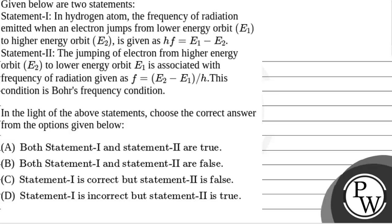Let's read the question. The question says that given below are two statements. Statement 1: In hydrogen atom, the frequency of radiation emitted when an electron jumps from lower energy orbit E1 to higher energy orbit E2 is given as Hf is equal to E1 minus E2.